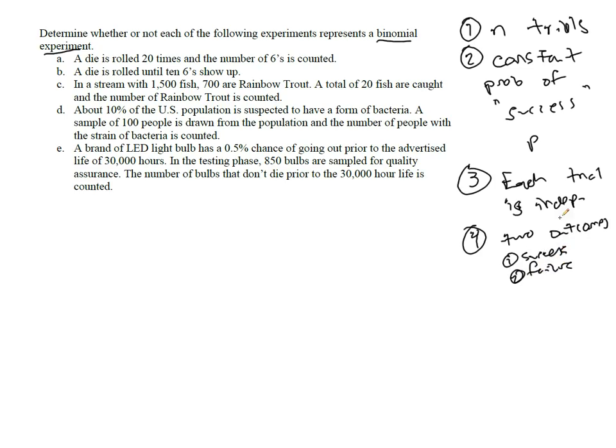Now that's dictated by our experiment itself. So if a die is rolled 20 times and the number of sixes is counted, well there are exactly 20 trials. The probability of success is one in six.